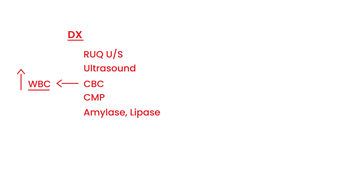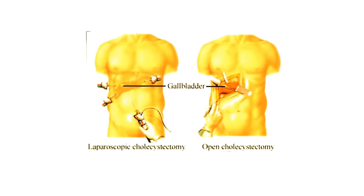The treatment of cholelithiasis involves a cholecystectomy, which by definition is the surgical removal of the gallbladder. There are two ways to do this. The open way is the traditional method where a large incision is made in the right upper quadrant and the gallbladder — pointed to by the black arrow — is surgically removed.